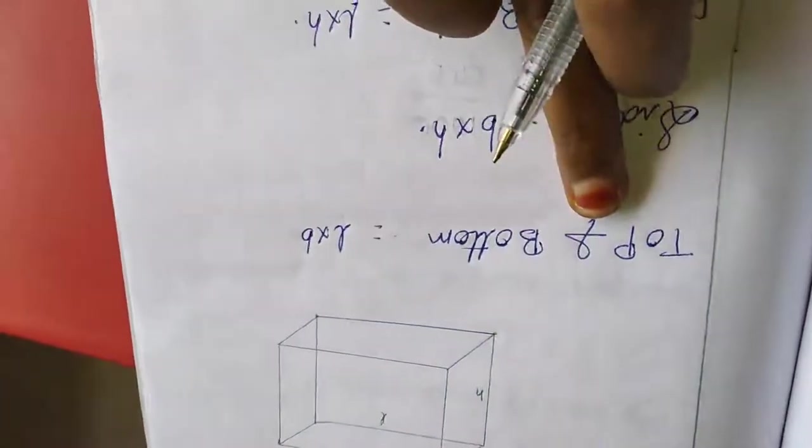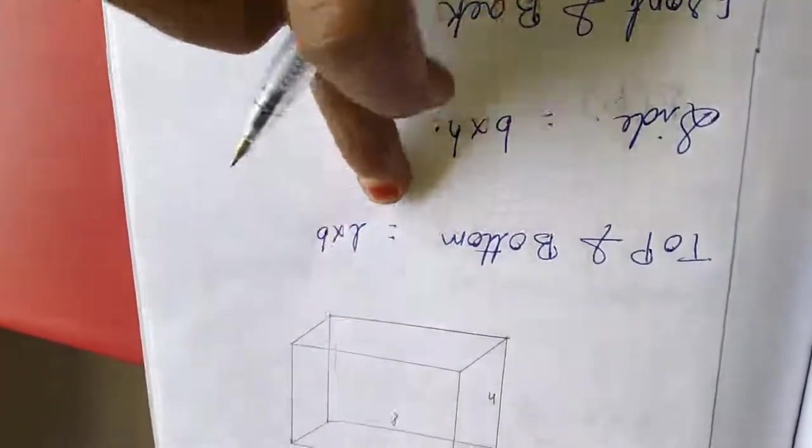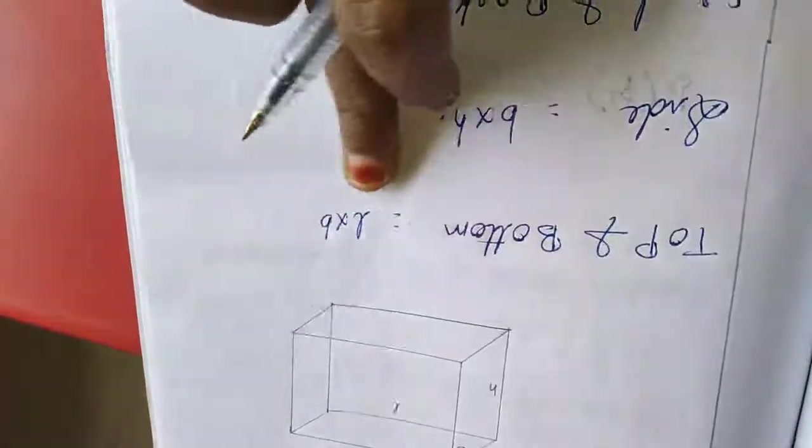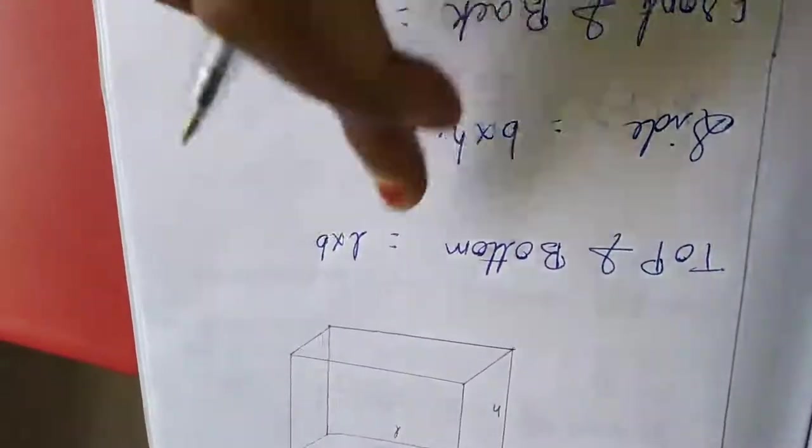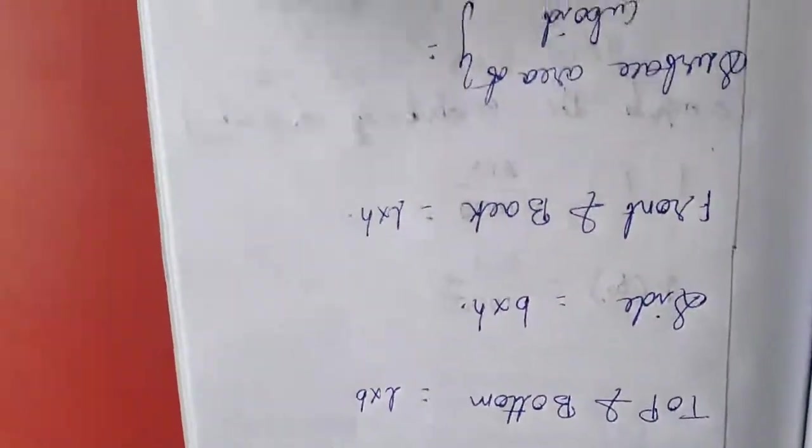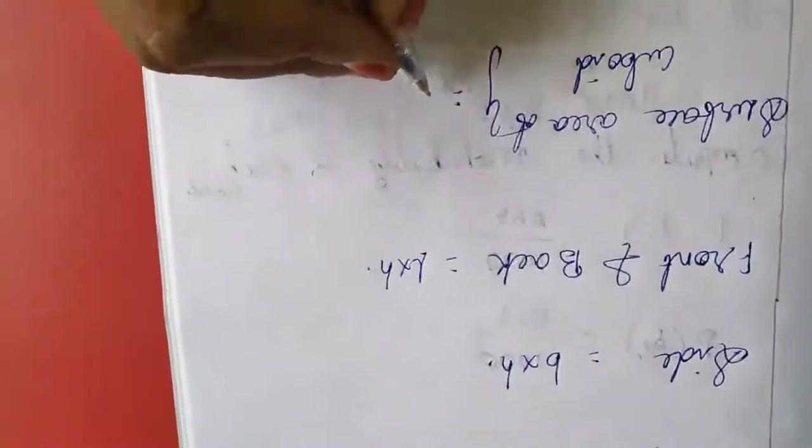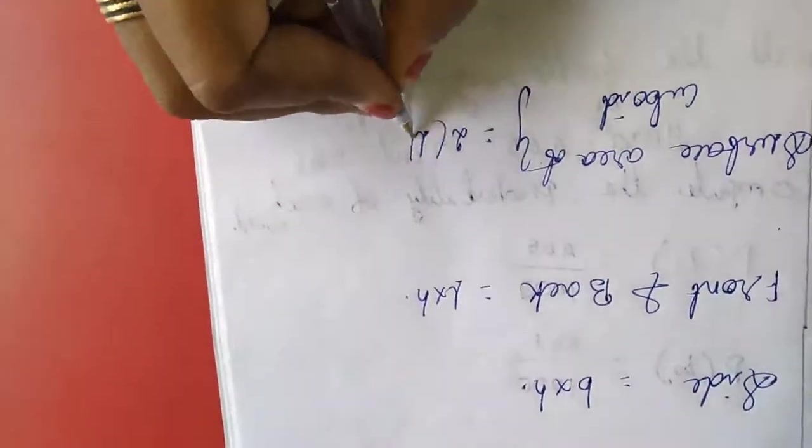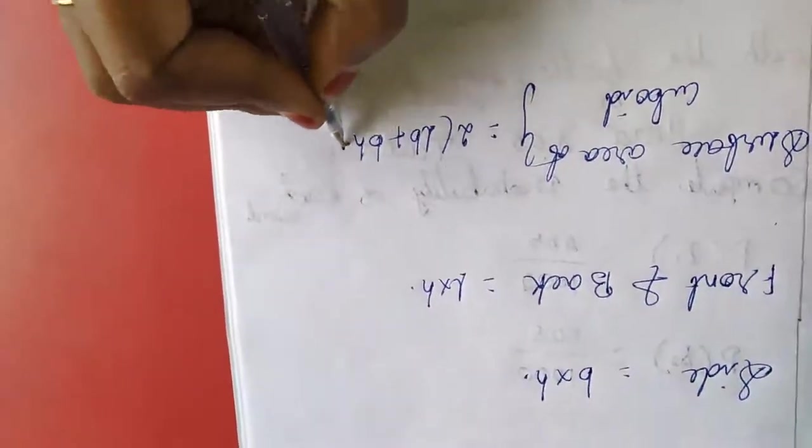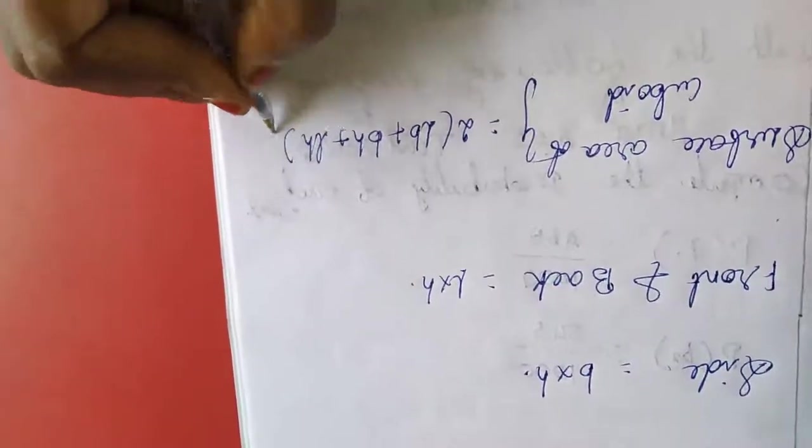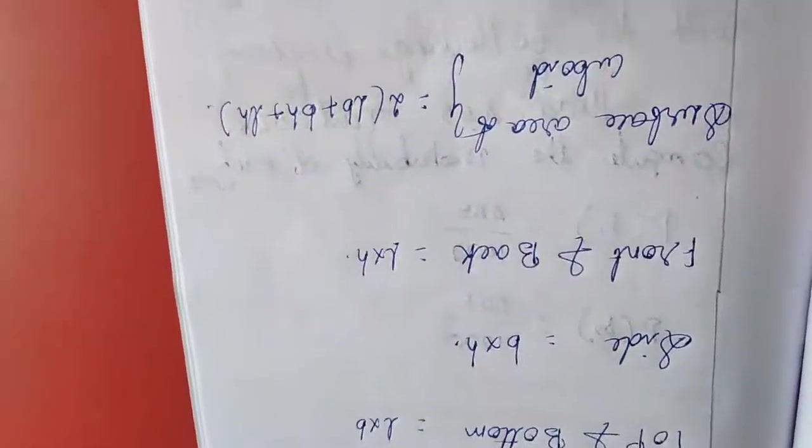If you need to leave top or bottom means you have to leave LB, one LB. So surface area of cuboid equals 2 into LB plus BH plus LH. This is the formula. Now we will move to the examples.